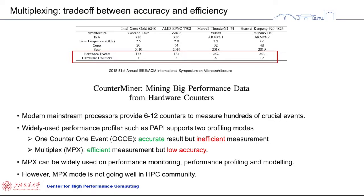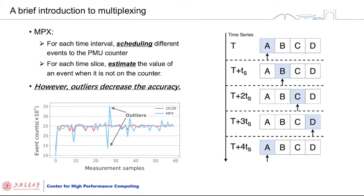Based on their idea, we improve the accuracy of multiplexing and explain the reason why outliers are generated. Multiplexing has two major steps: first is scheduling, and second is estimation. In the scheduling step, hardware counters record hardware events discretely. For instance, events A, B, C, and D are defined as the event set to be counted. All events can be fairly monitored in a fixed interval called a time slice. The event counts are recorded at the end of each time slice.